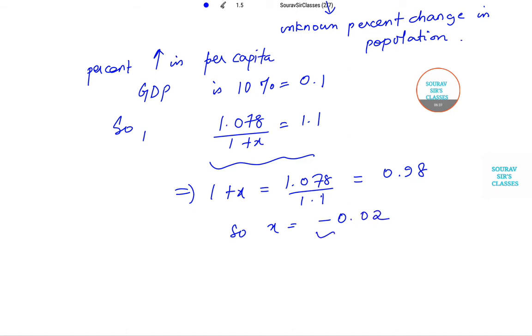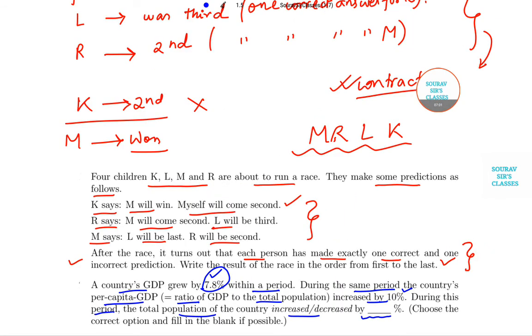So the minus indicates there is a reduction. So the population reduces, and you have to change this into percentage, so it reduces by 2 percent. Or you can even write decreased, because there was mentioned decreased or increased. So decreased by 2 percent. So if you want to fill this blank, this will be 2.